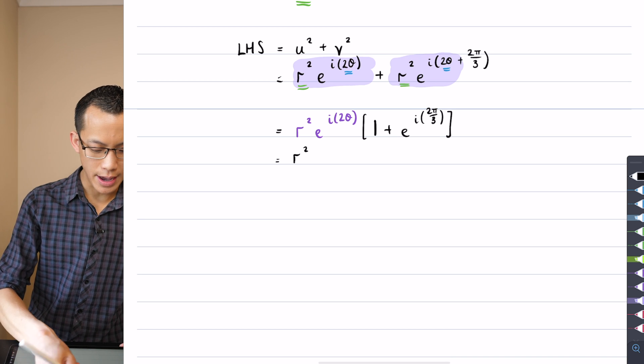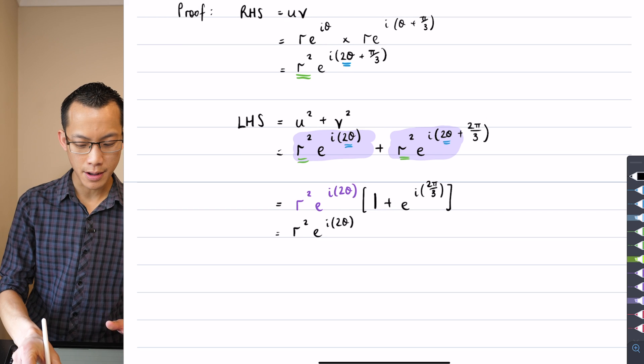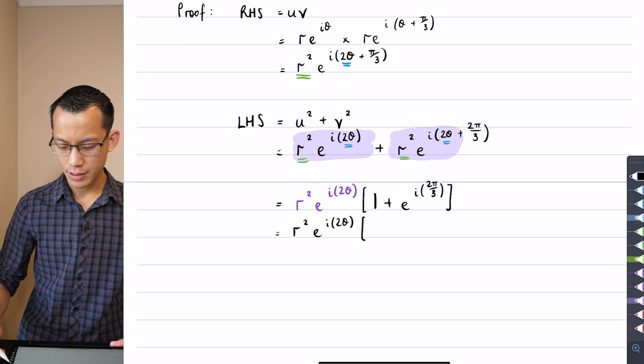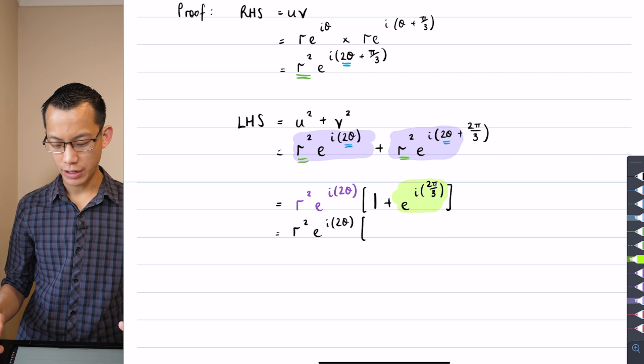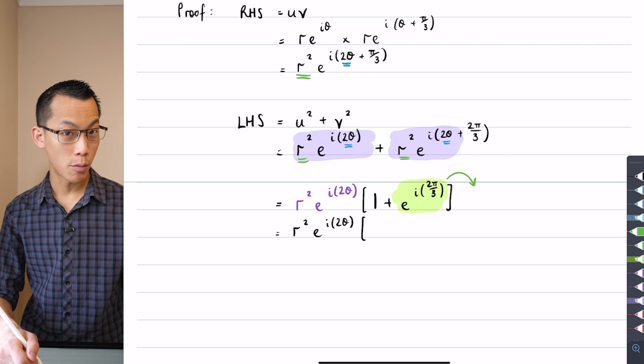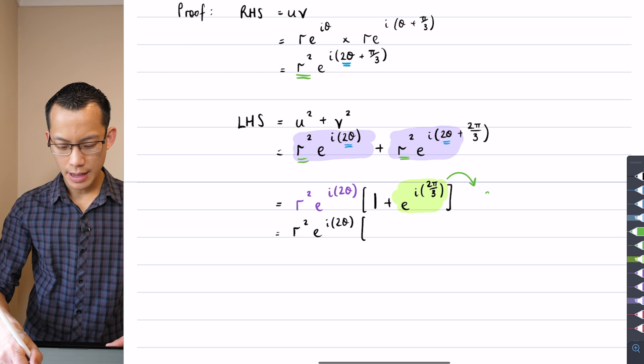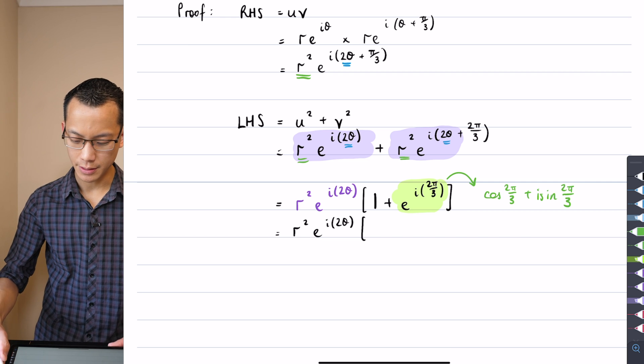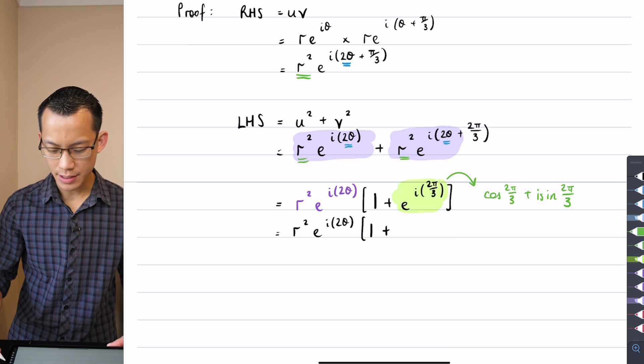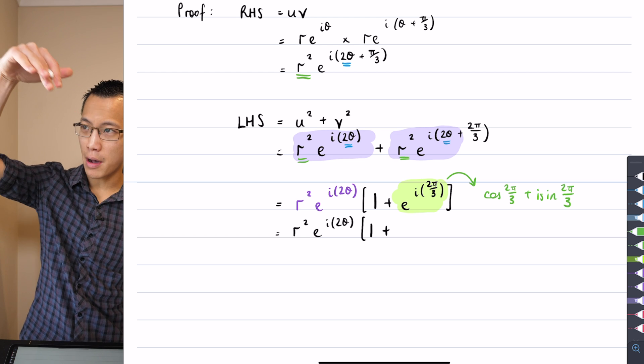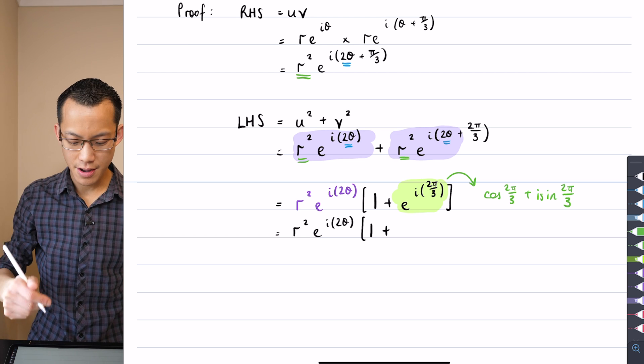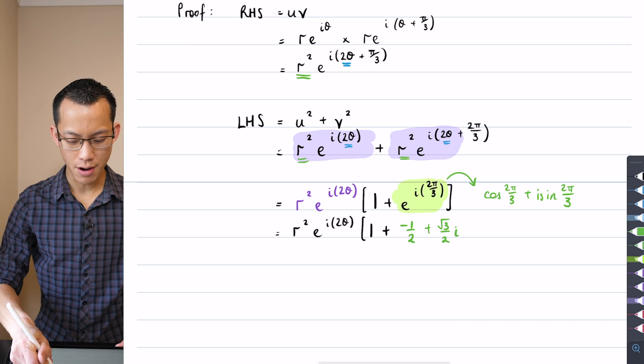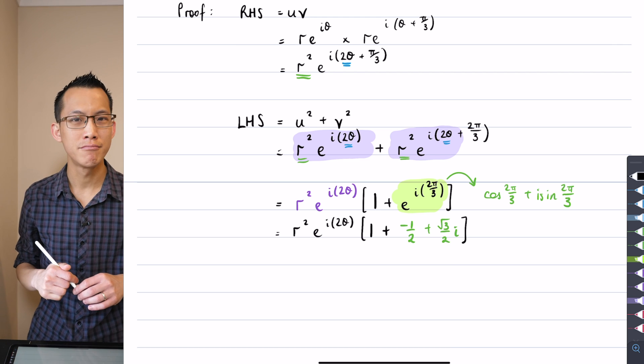I'll write this R² e to the i(2theta) out the front - that's actually my destination, essentially. Then what I'm going to do is notice that inside here I can use mod-arg form, trigonometric form, to help me evaluate this thing. By Euler's formula, e to the i theta equals cos theta plus i sin theta. So I get 1 out the front, and then I'm adding cos(2π/3) plus i sin(2π/3). Cos 2π/3 is going to be negative now - that's negative 1/2. And then plus √3/2 i because you're getting that √3, 1, 2, √3 triangle.